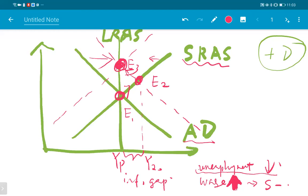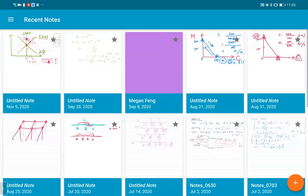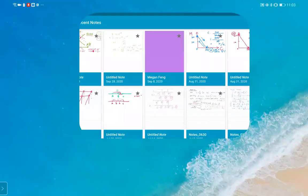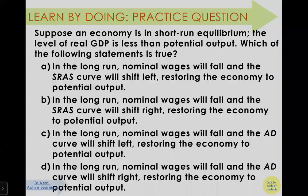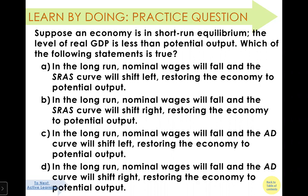We move from E1 to E2 and then to E3. As homework, you may want to do the opposite — what happens if there is a negative demand shock and how the economy will respond. Suppose an economy is in short-run equilibrium and the level of real GDP is less than potential GDP. Because we produce less than we potentially can, that means we have a recessionary gap.